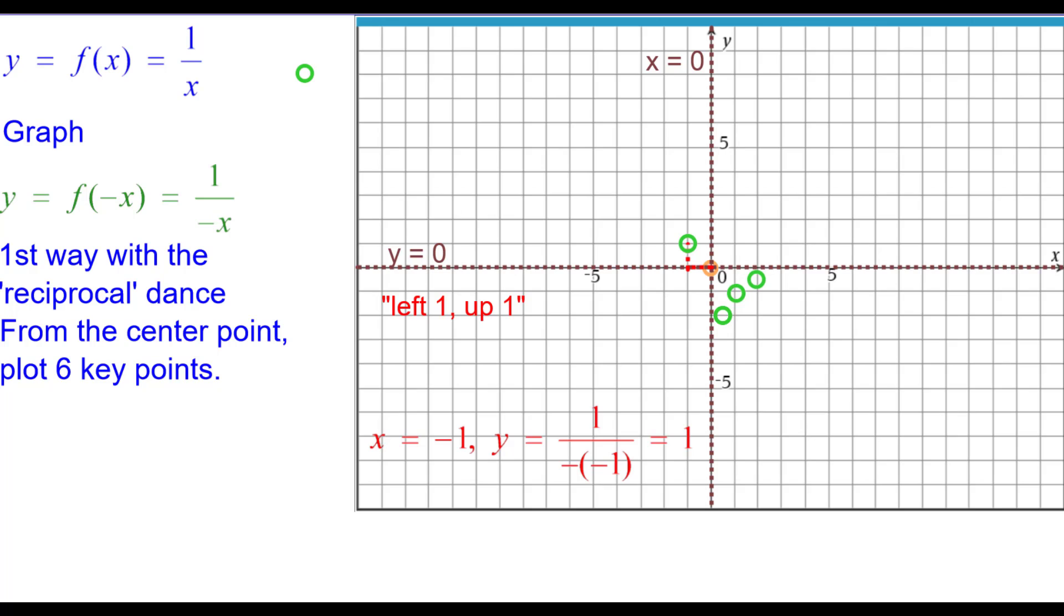In the second quadrant, left one up one. Normally it would be left one down one, but because of the opposite of negative one is positive one. Left two up a half, the opposite of negative two is positive two and the reciprocal of that is a half. And left a half up two, the opposite of negative a half is positive a half and the reciprocal of that is two.